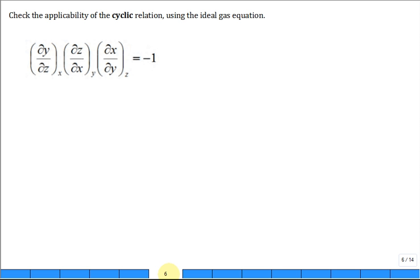Use the ideal gas equation and check the cyclic relation. So we'll start with PV is equal to RT.